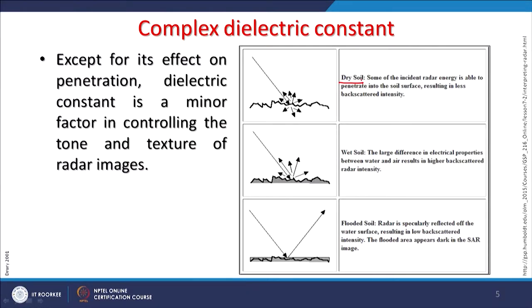Radar remote sensing is generally done using C band, S band, or X band, with C band being most common. In soil, some of the incident radar energy is able to penetrate the soil surface, resulting in less backscattered intensity. Wet soil with high moisture content shows large reflection because of greater water content.